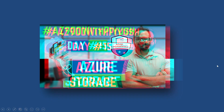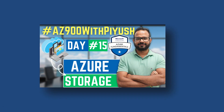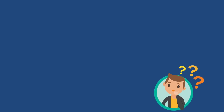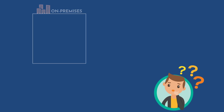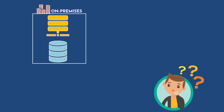In the previous video, we have seen different storage options within Azure. It is also important to understand how to get your data and information into Azure. A traditional on-premises infrastructure would have servers and databases running on either VMware, Hyper-V, or physical servers.